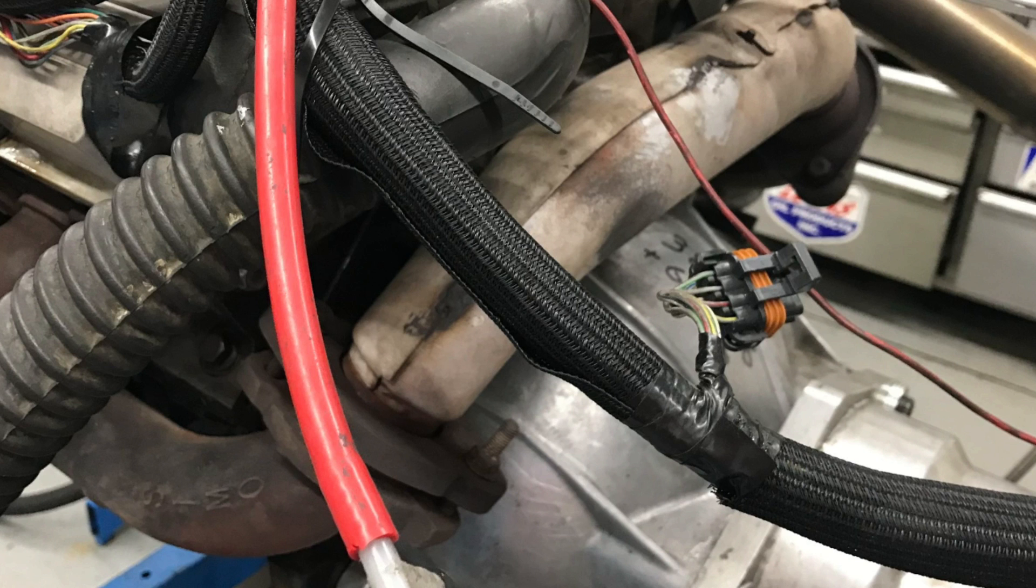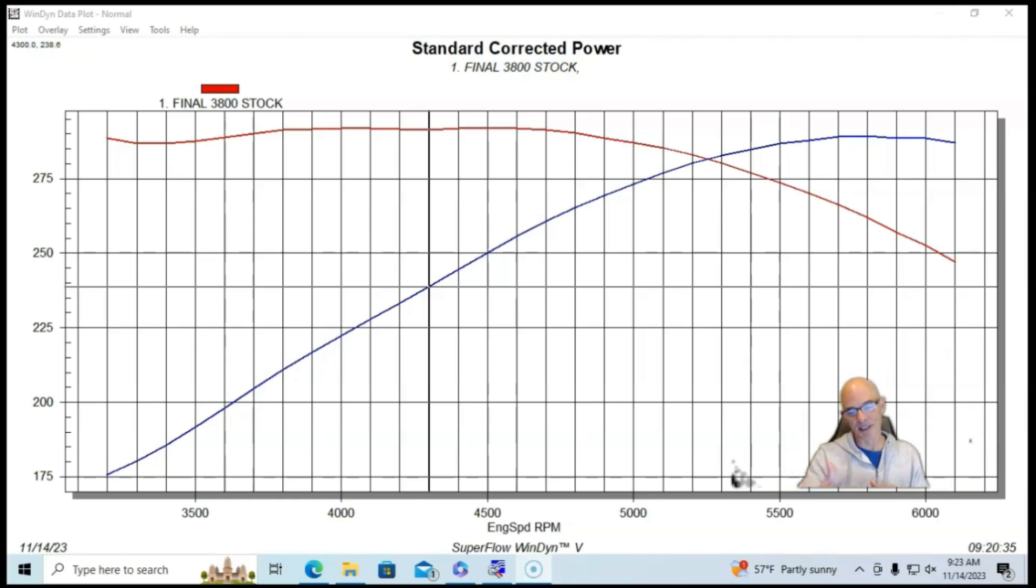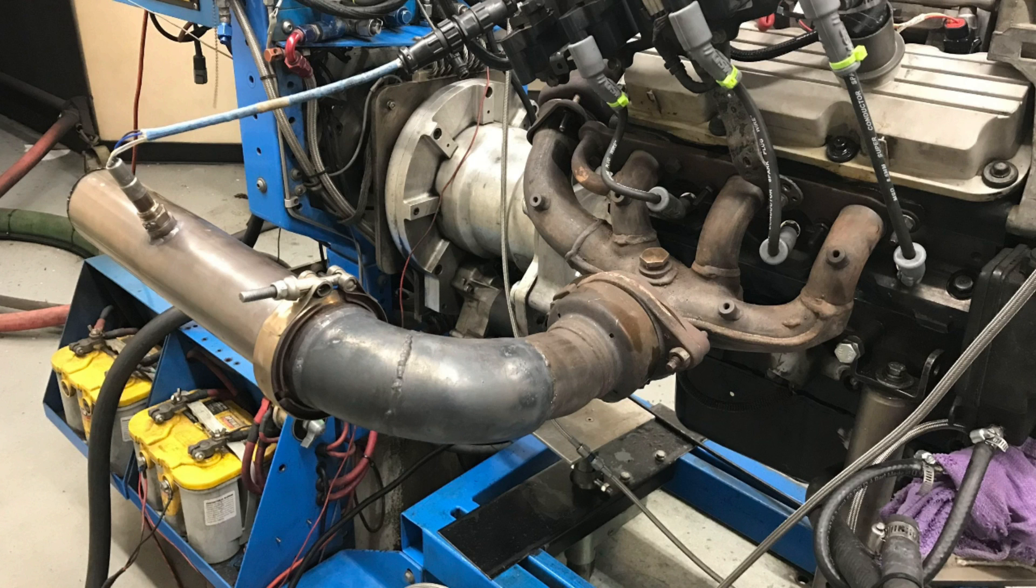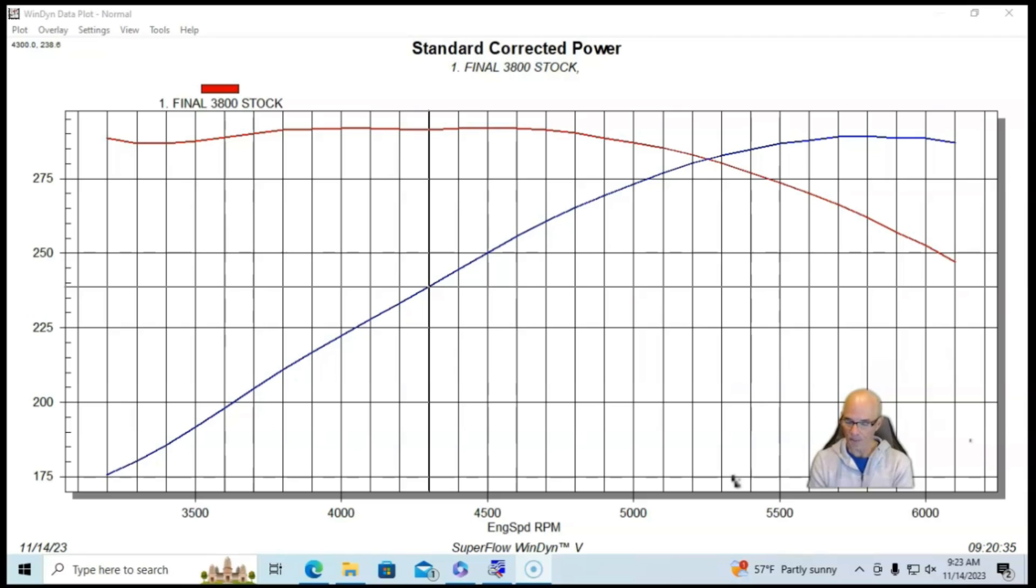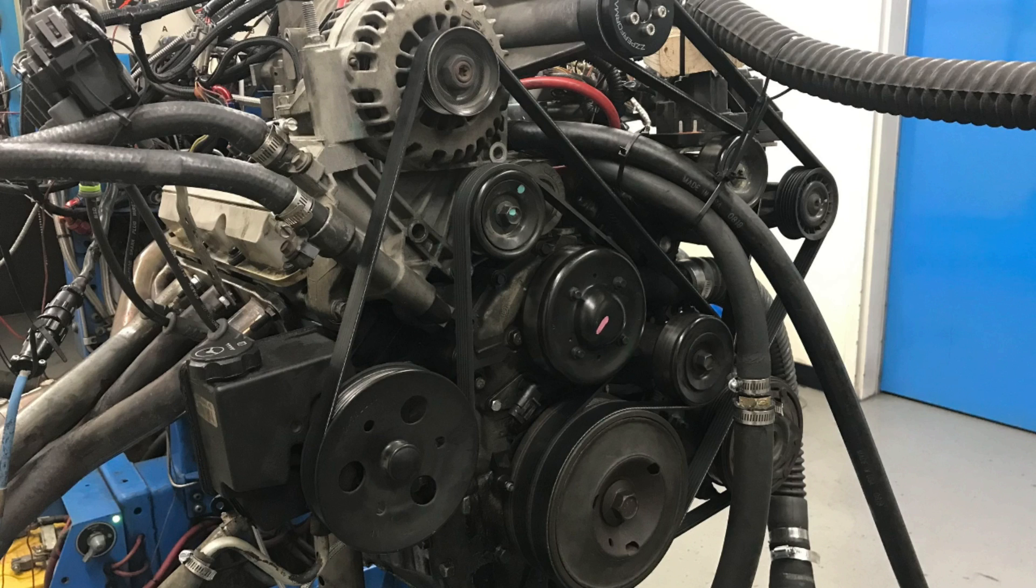The open throttle body—it did have full accessories on it because we needed the accessories to run the water pump. We don't have an electric water pump for the 3800, so we ran all the accessories.